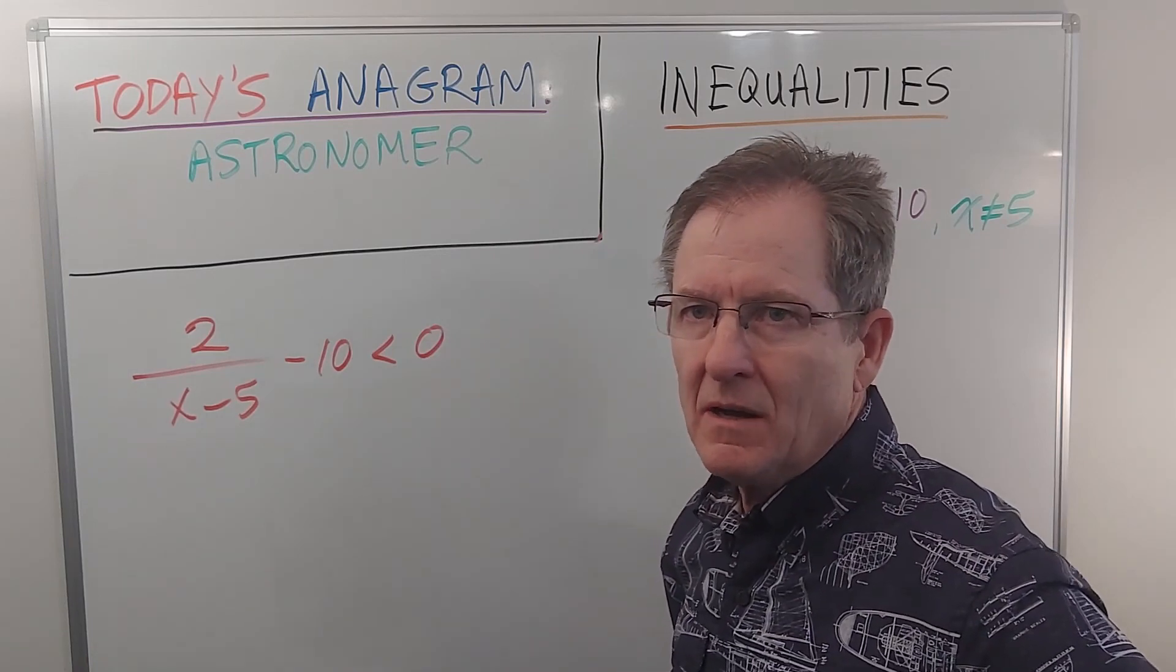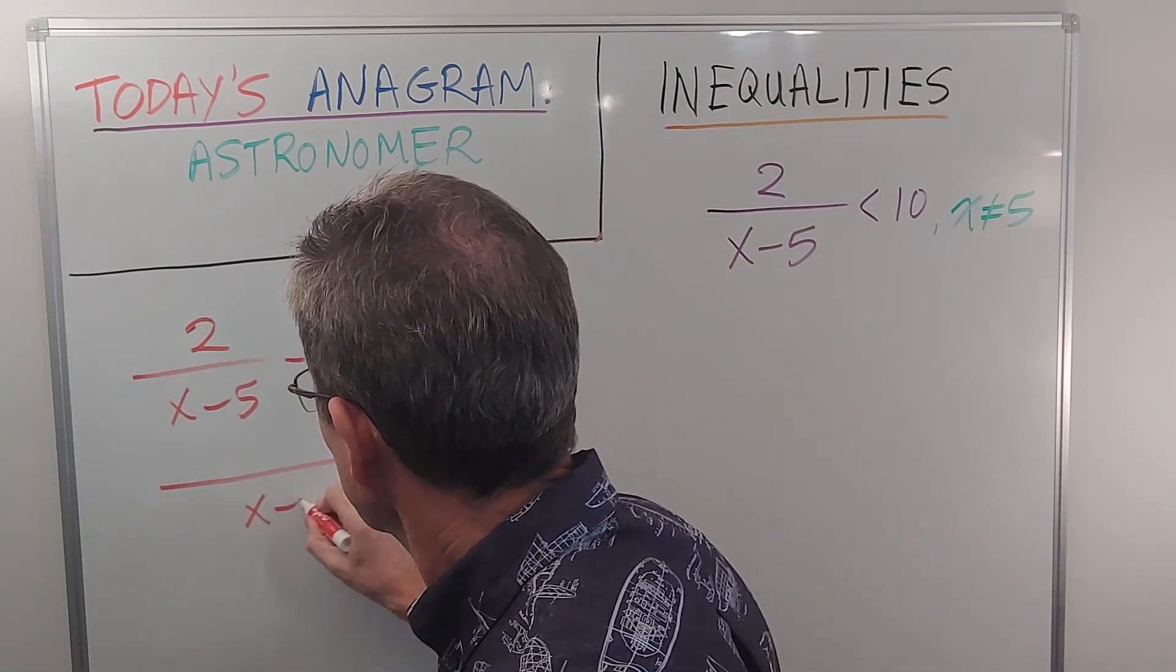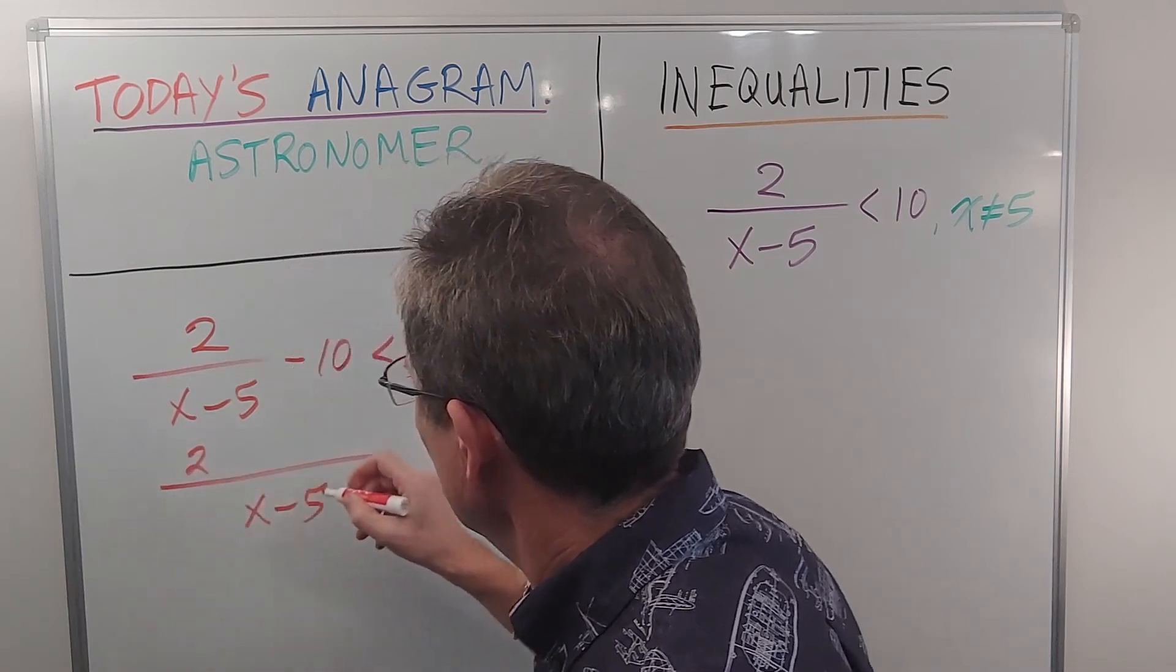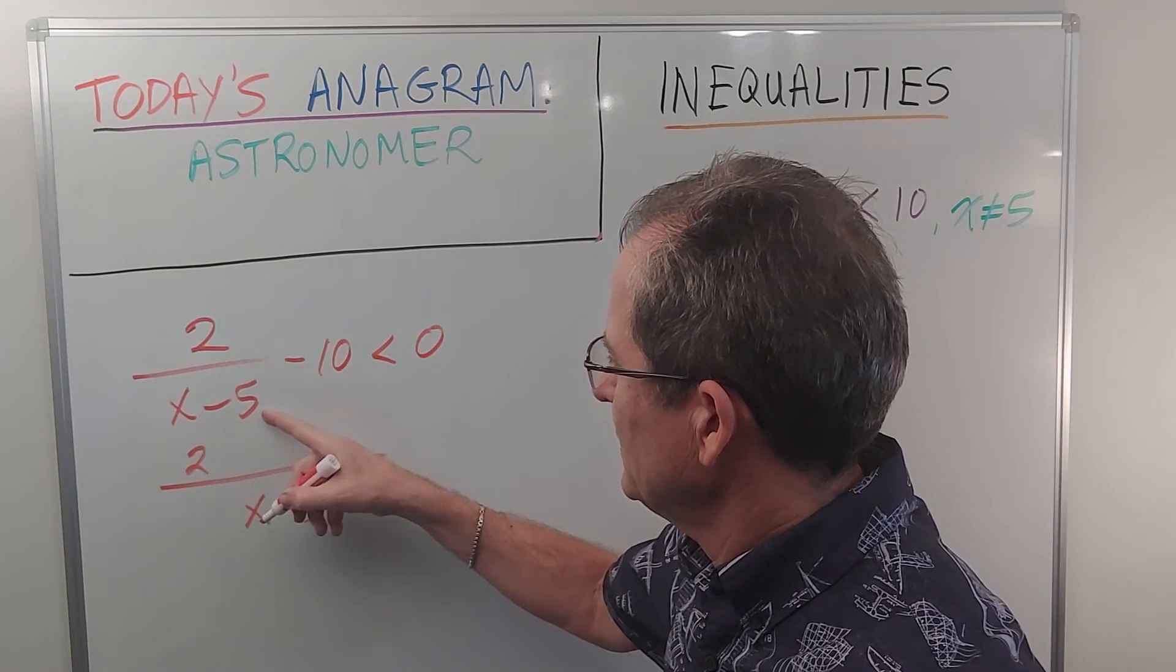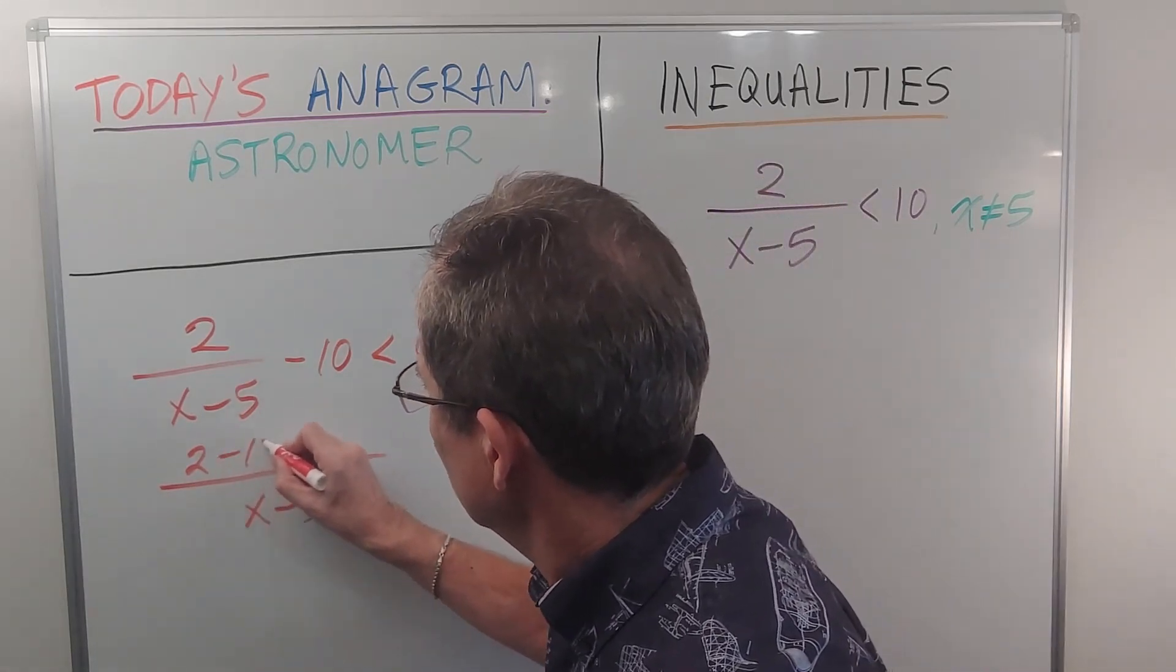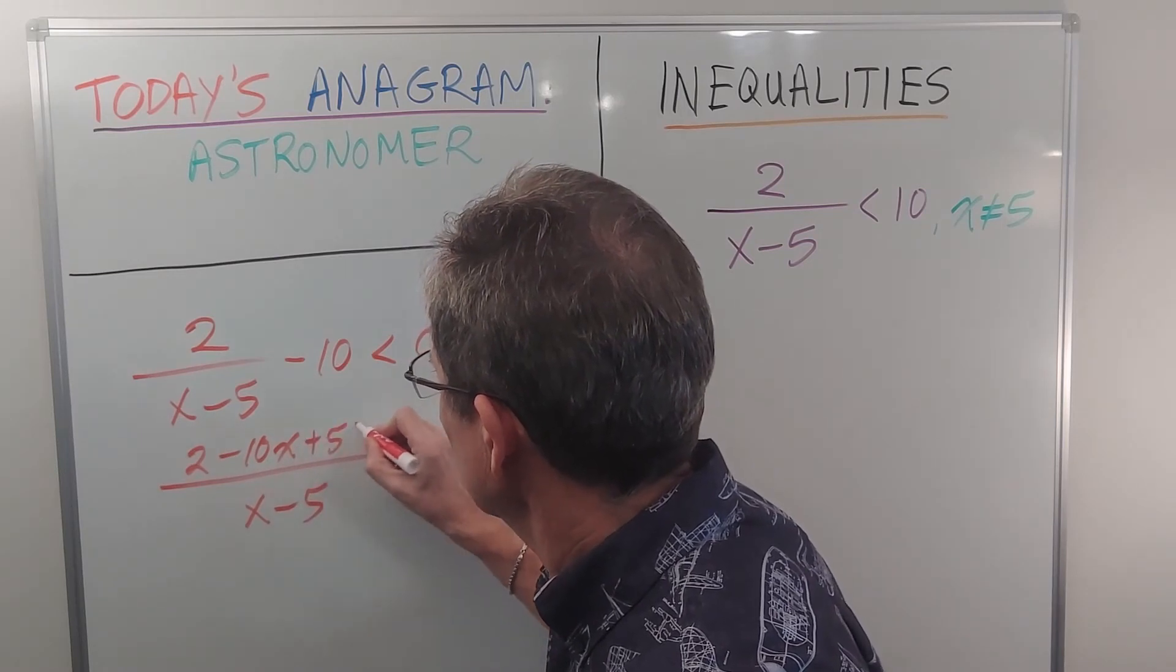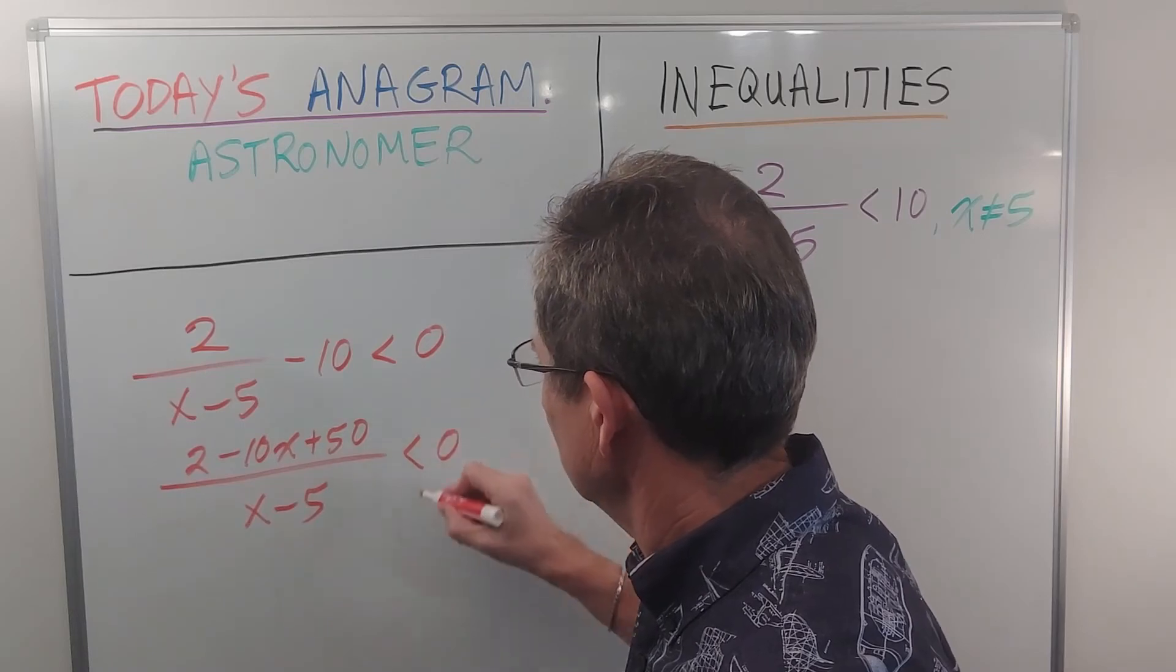And now let's get a common denominator, which will be x minus 5. Two stays the same. But I have to multiply the negative 10 by x minus 5 and divide by x minus 5 to get that denominator. So I'm going to get negative 10x plus 50 because it's a negative times a negative. That's less than zero.